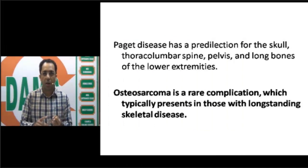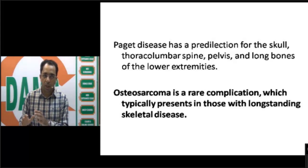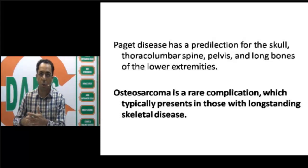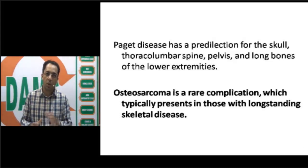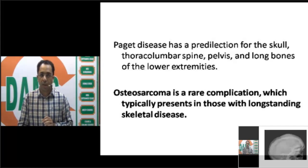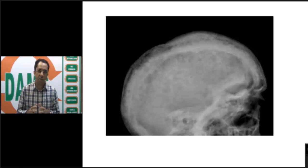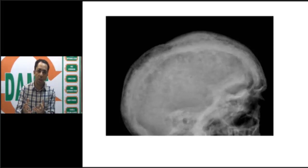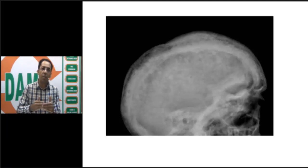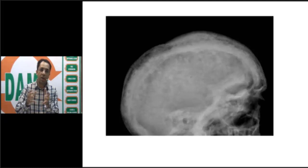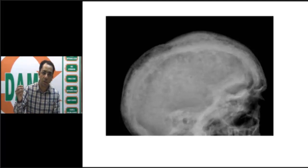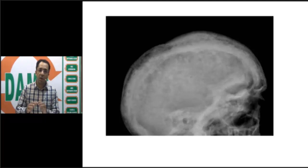The bones to examine are the skull, thoracolumbar spine, pelvis, and long bones. An important point every undergraduate should know: there is a rare but important complication - osteosarcoma - possible in long-standing disease. The examiner may show a skull X-ray instead of a pelvic one. In the initial lytic stage, Paget's disease shows an osteolytic lesion called osteoporosis circumscripta. Then there is a mixed phase with both lytic and blastic responses. In the skull, the cranial wall appears thickened with multiple sclerotic foci called cotton wool spots, very typical of Paget's disease.